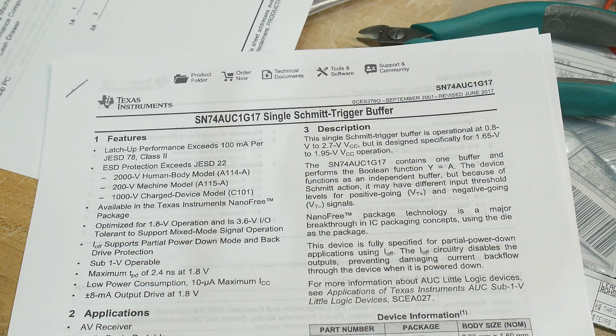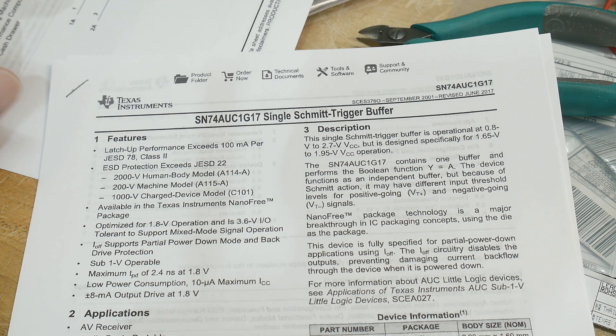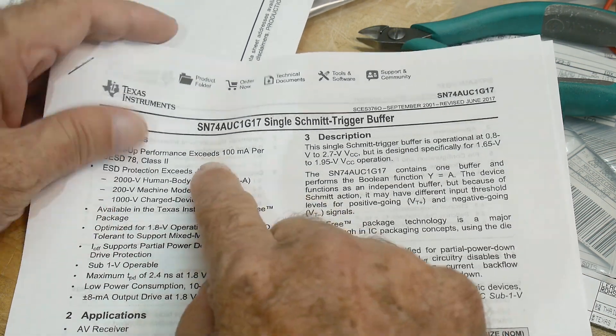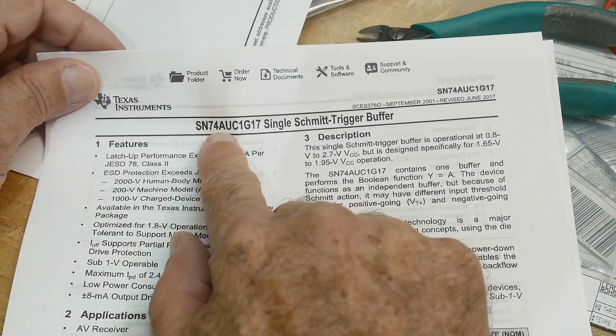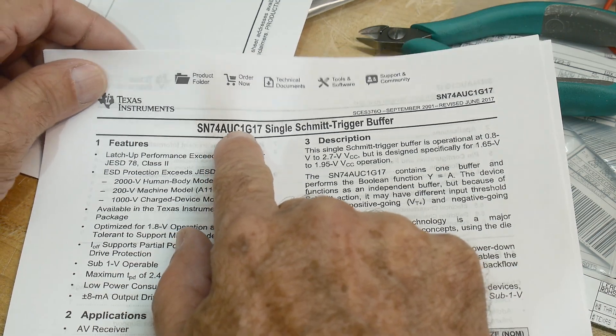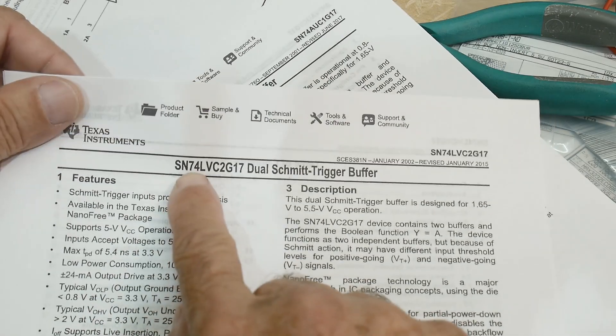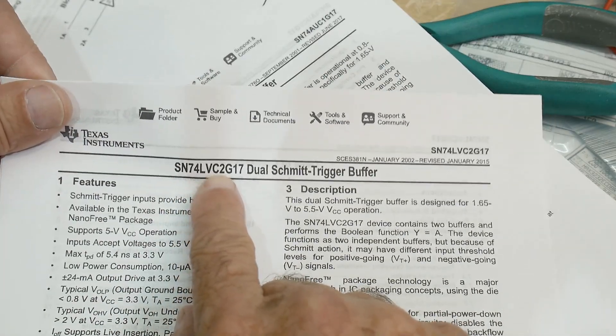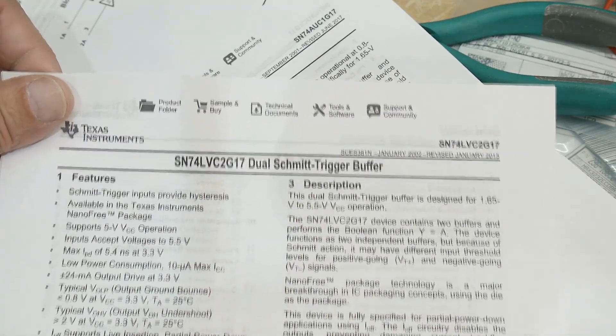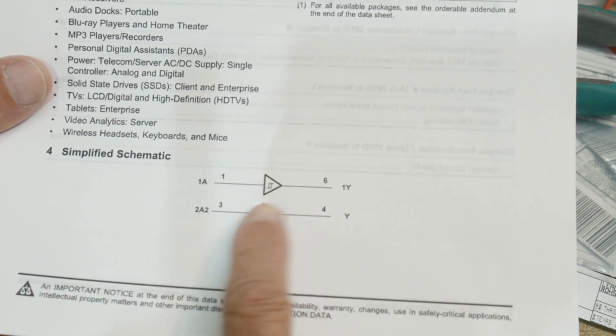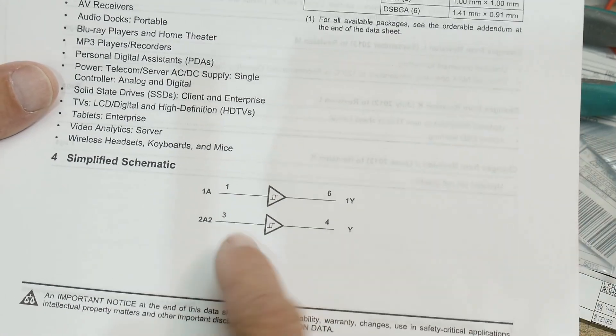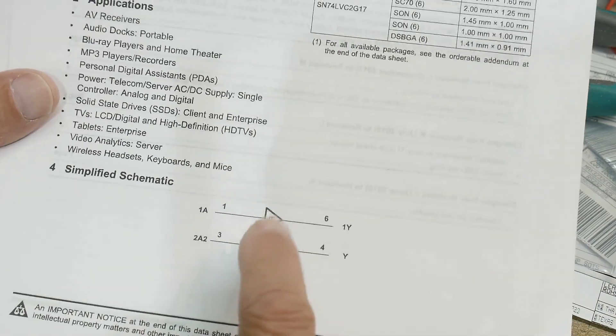Alright, chip of the day, or I should say chips of the day. Yes, this is a twofer. We're going to have two chips today. The first is a 74AUC1G17, and the next one will be a 74LVC2G17. So they're both 7417s, which is a lot like a 7414, except they're non-inverting. So it's a Schmitt trigger non-inverting buffer. Real nice device.